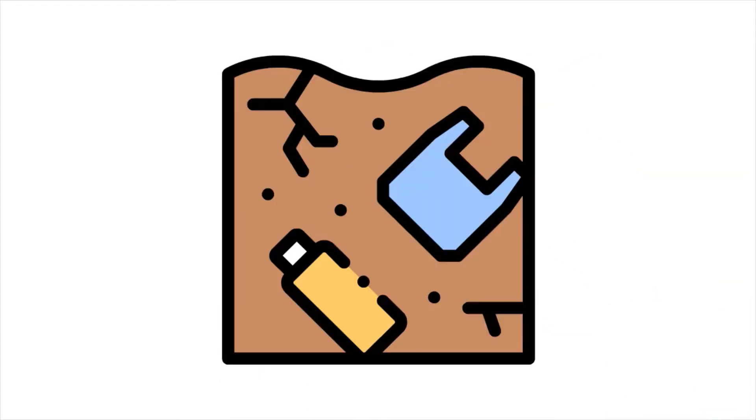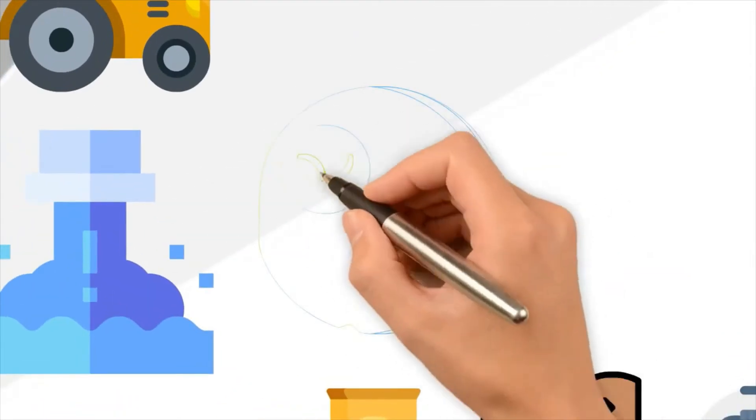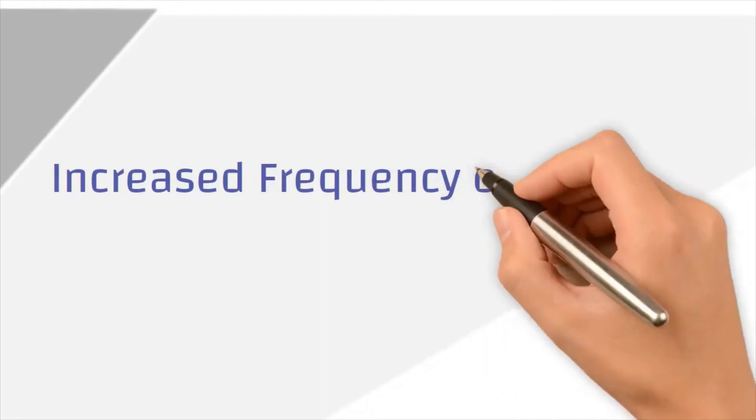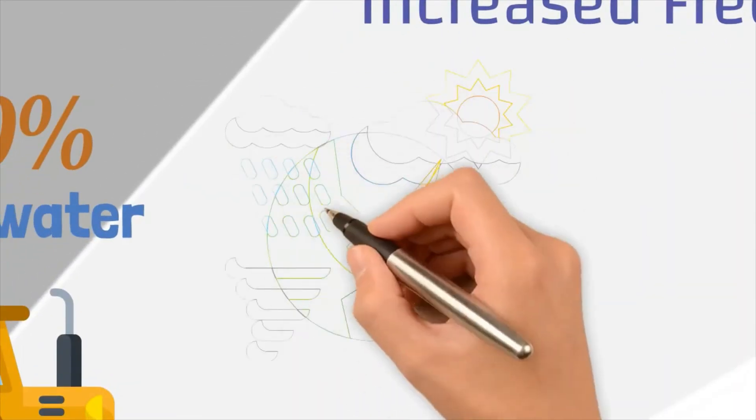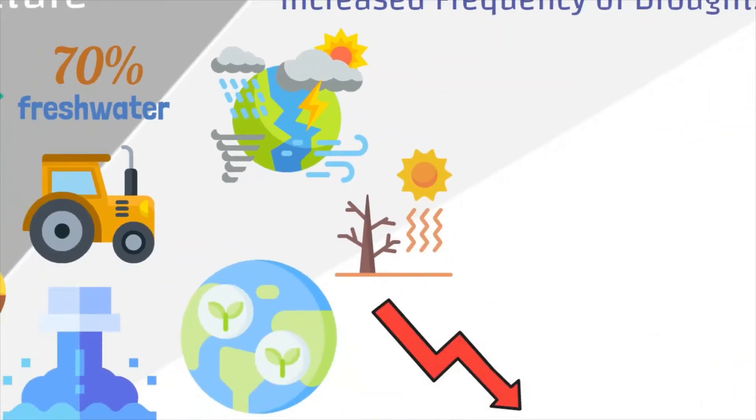Added to these thirsty crops are the fact that agriculture also generates considerable fresh water pollution, both through fertilizers as well as pesticides, all of which affect both humans and other species. Increased frequency of droughts: The world's changing climate has been linked to an increased incidence of droughts that can greatly diminish fresh water supplies in a region.